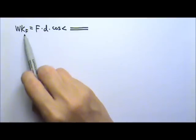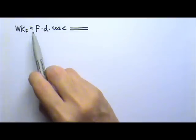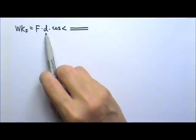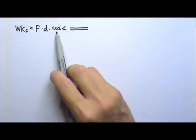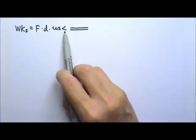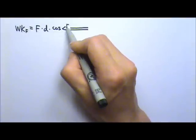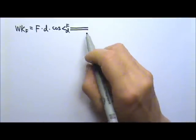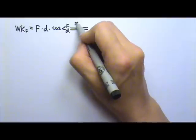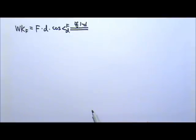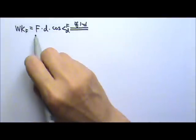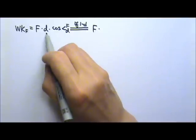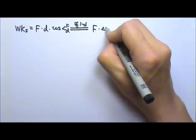To find the work done by a force, we use the magnitude of the force times the magnitude of the displacement times the cosine of the angle between the force and the displacement. For a one-dimensional case, we can just use force times displacement, where displacement is delta x.